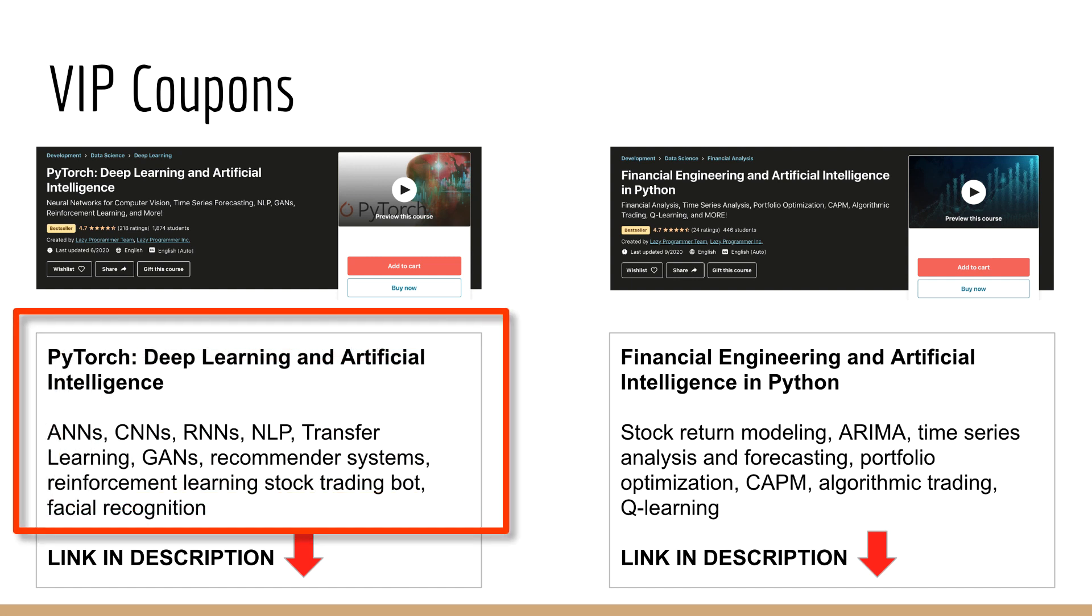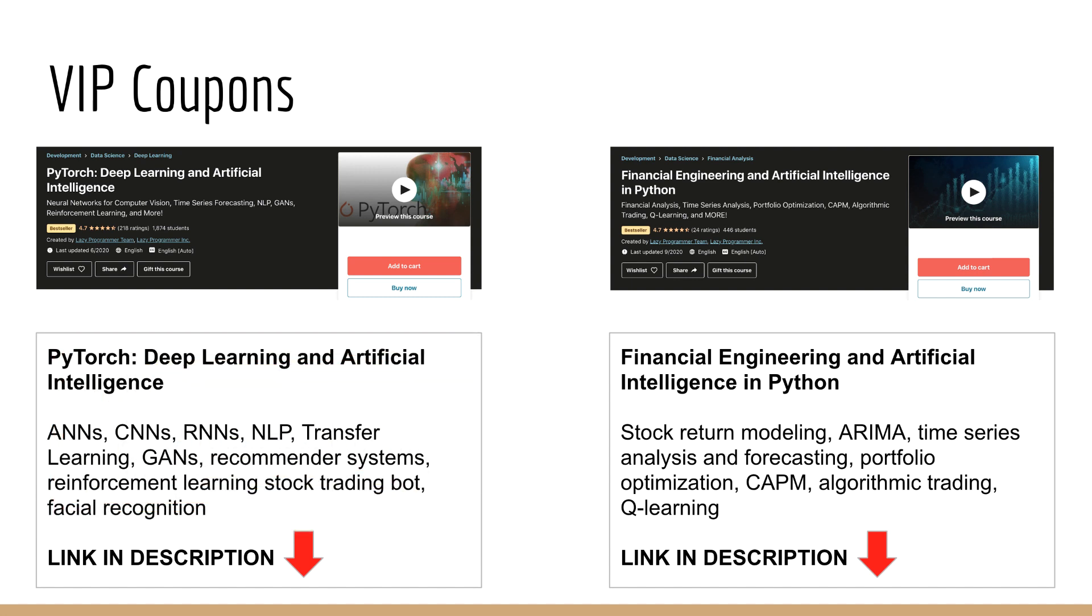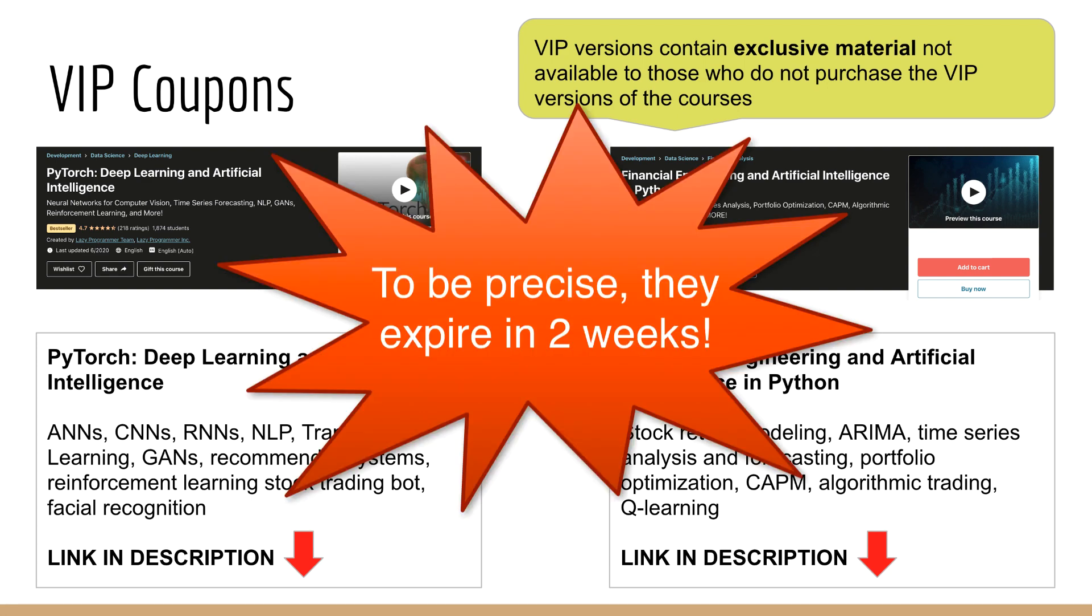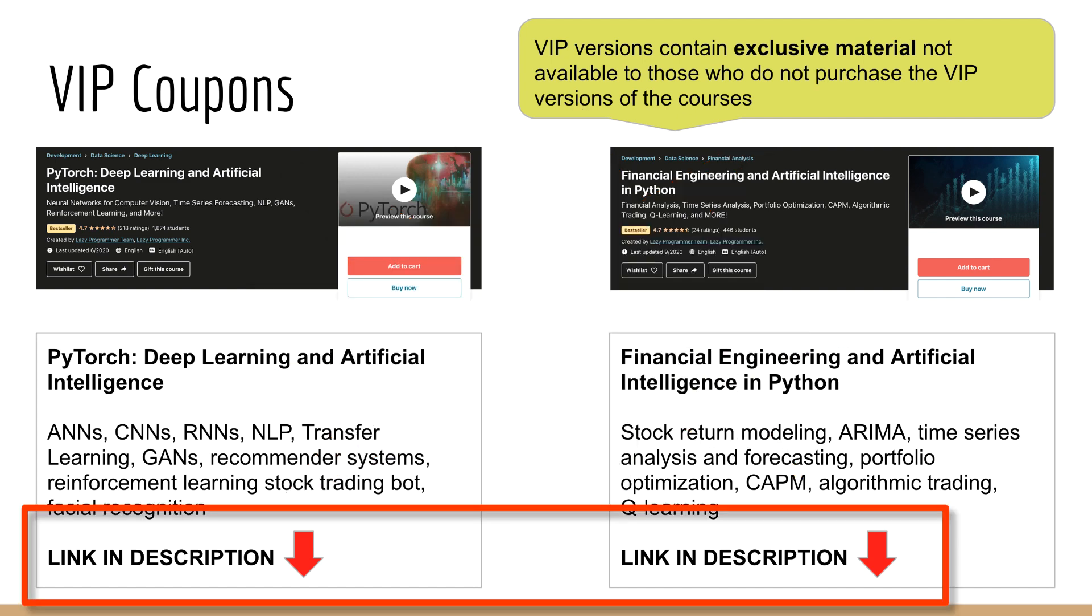My latest deep learning course on PyTorch covers everything from the ground up, from basic linear models to ANNs, CNNs, and RNNs, along with NLP, computer vision, transfer learning, GANs, recommender systems, facial recognition, and deep reinforcement learning. Remember that the VIP versions of these courses contain exclusive content that you will not get if you do not get the VIP version of the course. The current VIP coupons expire in less than one month, so get your copy today. By clicking on the links in the description below, the VIP coupons will be automatically applied, so you don't have to enter the coupon code yourself.